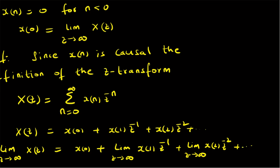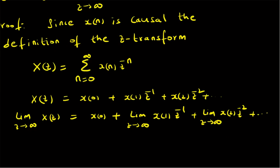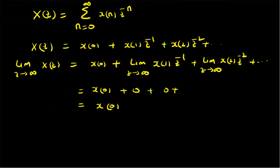That is, we have an infinite number of terms. The first term is still X of 0, and the second term becomes 0 because the limit as Z tends to infinity of X of 1 times Z power minus 1 — this value Z power minus 1 becomes 0 as Z tends to infinity. Similarly, the third term also becomes 0, and so on; all subsequent terms become 0. So this summation finally becomes X of 0. Therefore the initial value theorem is proved, that is, X of 0 is indeed equal to limit Z tends to infinity of X of Z.